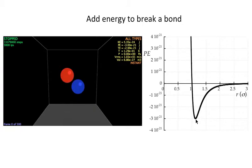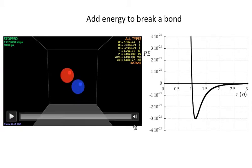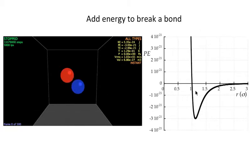To break this bond I would have to add back that amount of energy, 3 times 10 to the minus 21. So that's what I'm going to do in this simulation. You can see the simulation right now has potential energy of minus 3 times 10 to the minus 21. It just tells you that those two atoms are exactly this distance apart, about 1.12 sigma apart. They're right at their bond length.